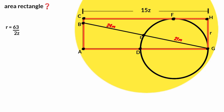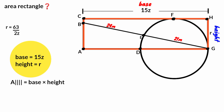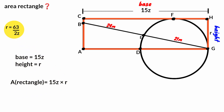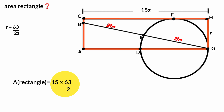Now back to the rectangle to calculate its area. Using the formula: Area = base × height. Taking this as the base: base = 15Z, and height = R. Substituting R = 63/(2Z): the Z cancels, and 15 × 63 = 945. So the area of the rectangle equals 945/2 square units.